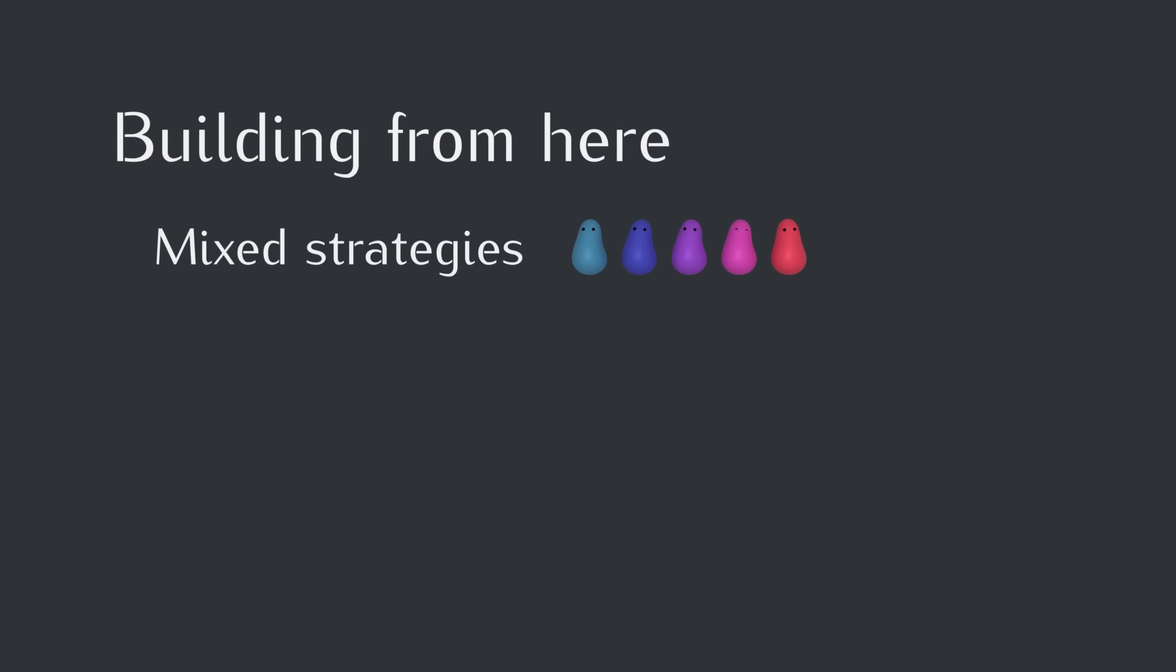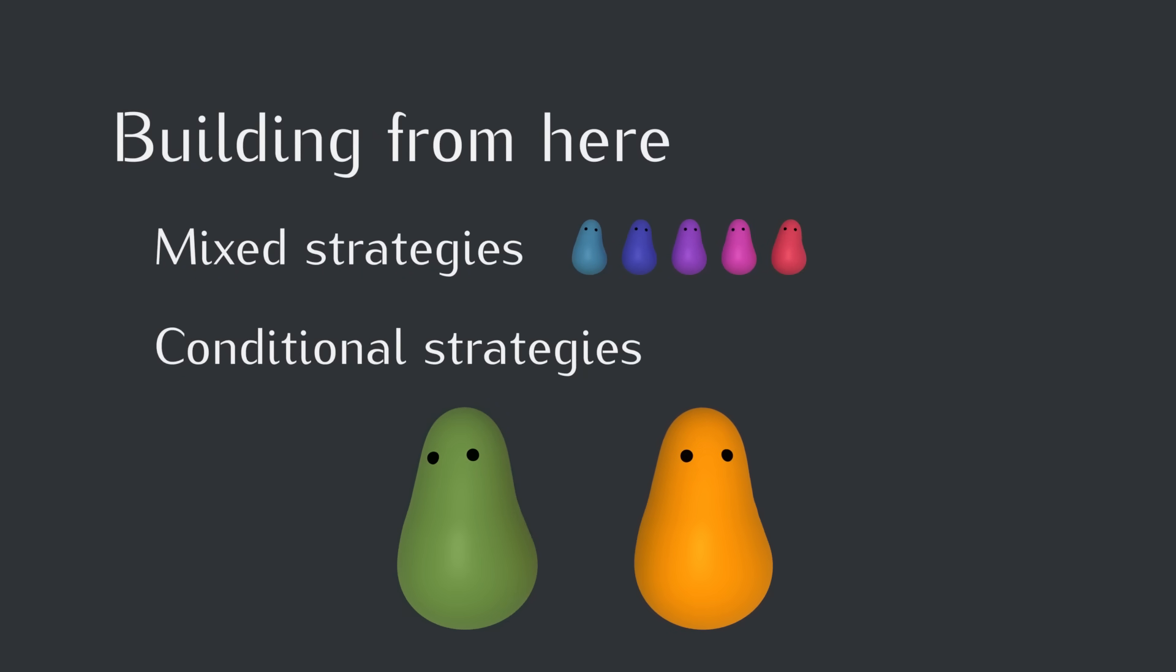There can also be more complex conditional strategies that act differently depending who they're facing. For example, there could be a strategy that fights with hawks but is nice to doves. And there could also be a strategy that tries to threaten a fight but runs away if things get serious. And seeing what happens with these kinds of strategies can help us understand why some animals put on threatening displays while rarely actually fighting, or have somewhat ritualistic fights that usually don't harm anyone.